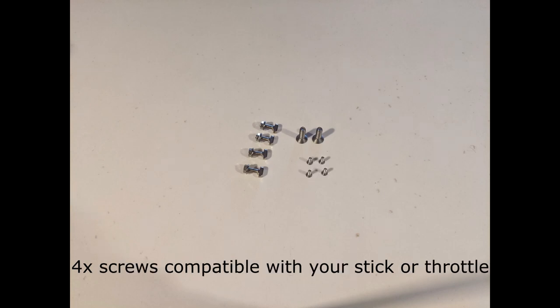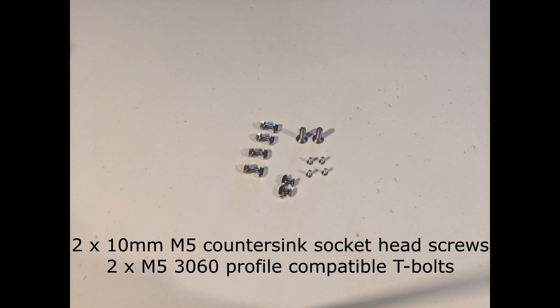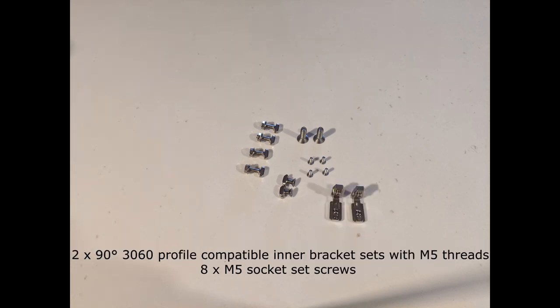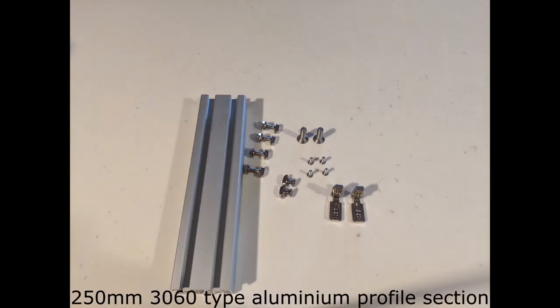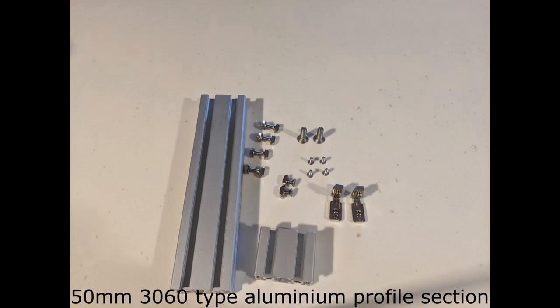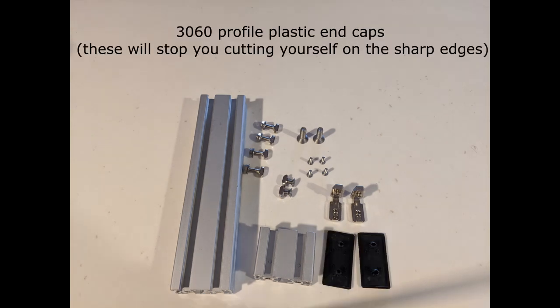The mounting screws that came with the Gunfighter. Two M5 countersink socket head screws along with T-bolts. A pair of 90 degree profile joints with M5 set screws. A 250mm section of 30-60mm profile aluminum extrusion. And a smaller 50mm section for our horizontal joystick support.